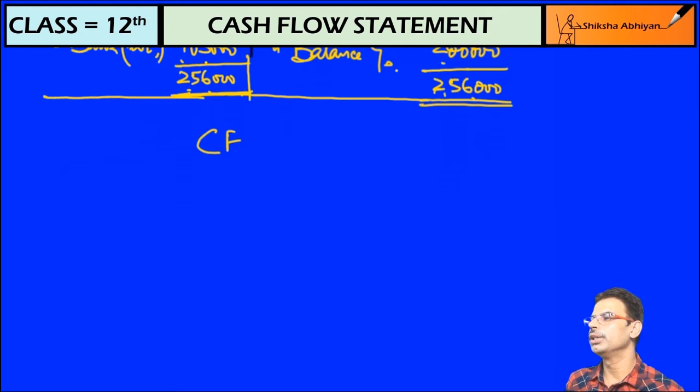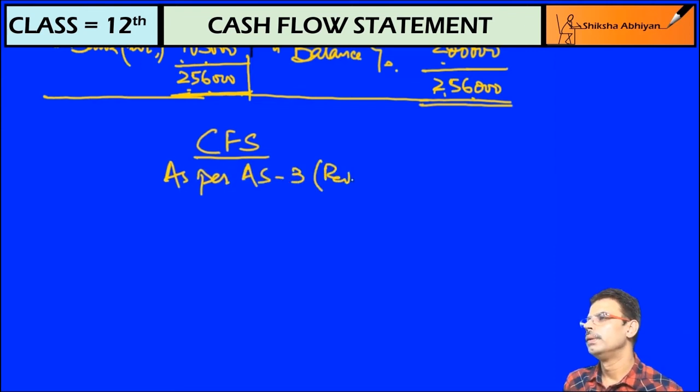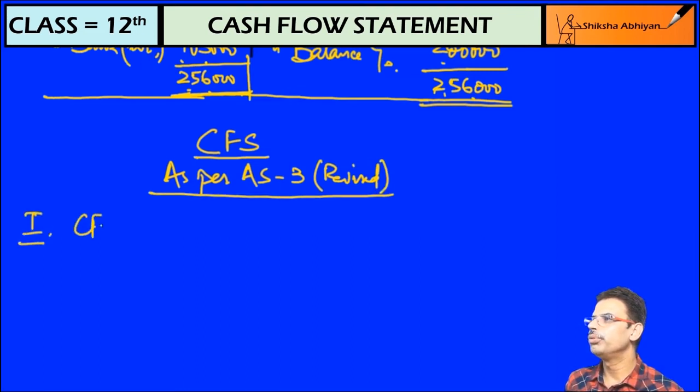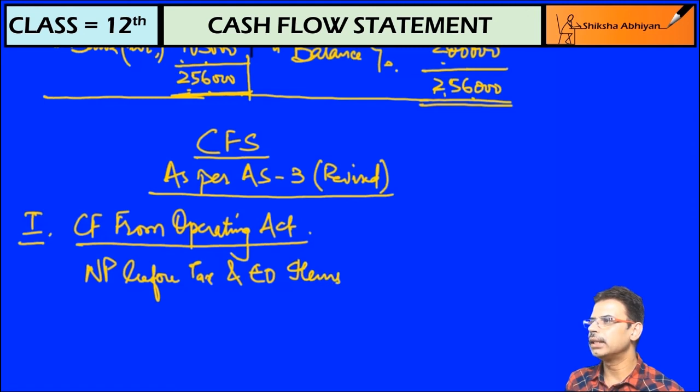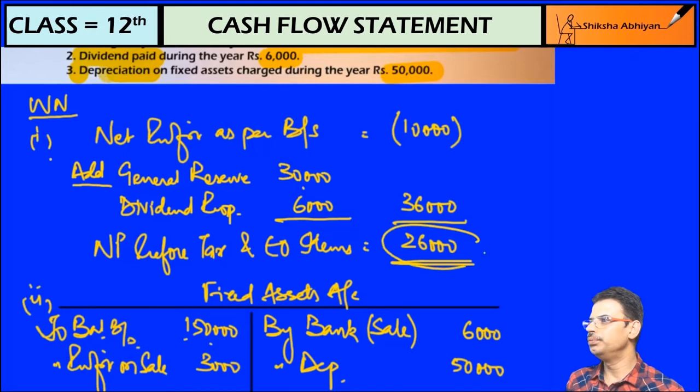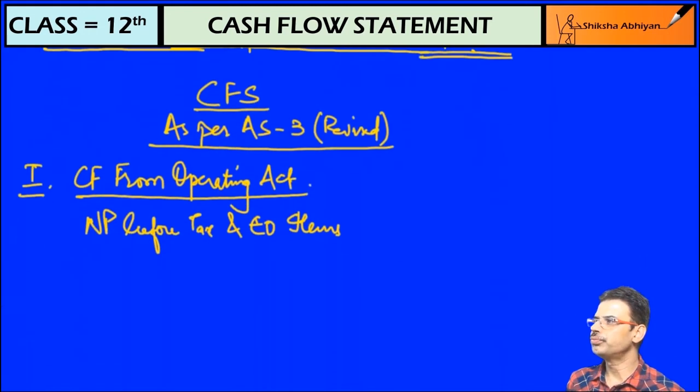Now we will start the cash flow statement as per AS-3 revised. First I need net profit before tax and extraordinary item. We should write a heading - cash flow from operating activities. We have 26,000 from net profit before tax and extraordinary item from working note number 1. 26,000.